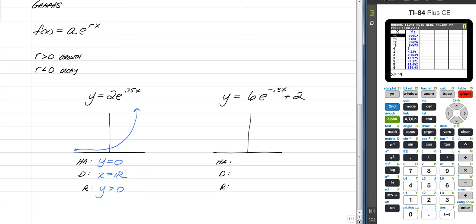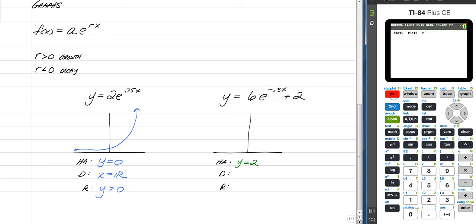So, next one. We should be able to determine that, since we have a plus two on the end, our horizontal asymptote is going to be y equals two, and then our range is going to have to have something to do with the two, but in order to graph it, since it's a negative rate, it's going to be a decay.